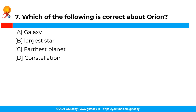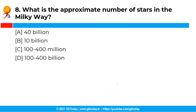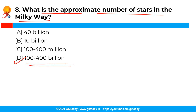The next question: which of the following is correct about Orion? The correct answer is Option D, i.e. constellation. Orion constellation is one of the brightest constellations recognizable in the night sky and is located on the celestial equator. The next question: what is the approximate number of stars in the Milky Way? The correct answer is Option D, i.e. 100 to 400 billion. The Milky Way is estimated to contain approximately 100 to 400 billion stars.